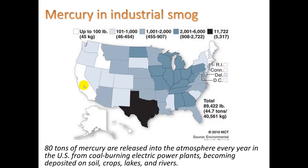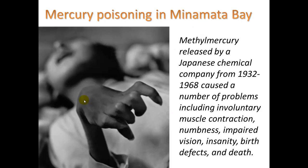In California, air is relatively clean because coal is not used there — natural gas collected off the coast provides about half of the state's electricity. Mercury poisoning is serious: a classic case occurred in Minamata Bay, Japan, where methylmercury was released by a Japanese chemical company from 1932 to 1968 — over 30 years. It caused involuntary muscle contraction, numbness, impaired vision, insanity, birth defects, and even death.